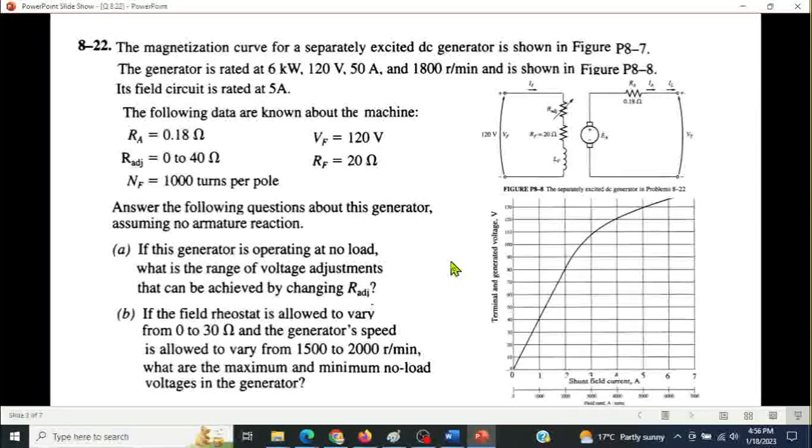A question given: the magnetizing curve for a separately excited DC generator is shown. Generator rating given 6 kilowatt, output voltage 120 volt, 50 ampere, 1800 RPM, and its field current given 5 ampere.